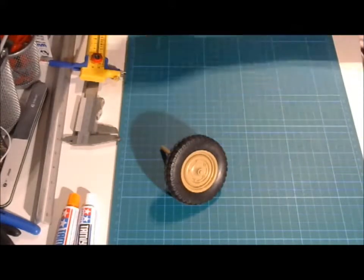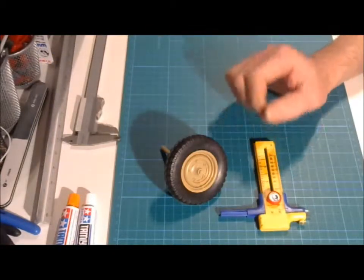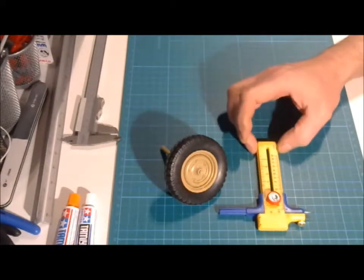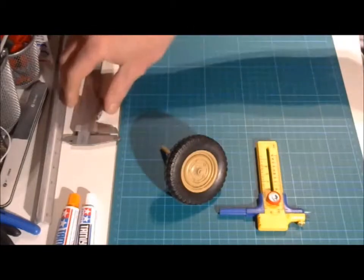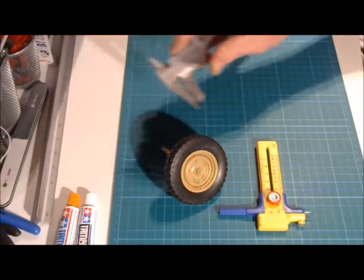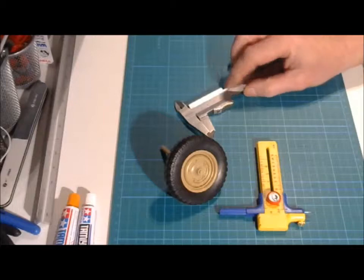But then again you need a circle cutter like this one. There are different kinds and different types. You take what you have. And you need a pair of calipers like this.